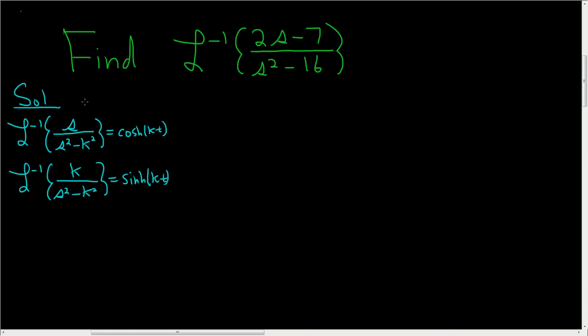So if it's cosinch, it has an s. If it's sinch, it has a k. If it's hyperbolic, it's got a minus. If it's just regular cosine and sine, then these are pluses.